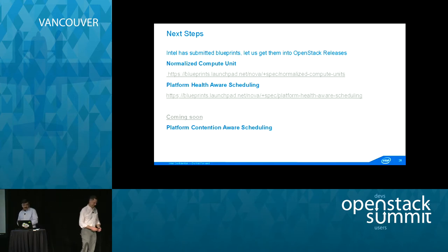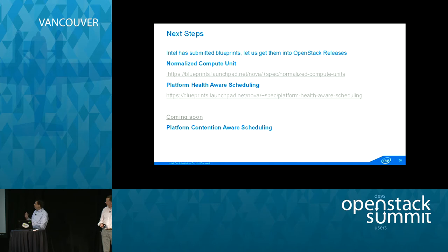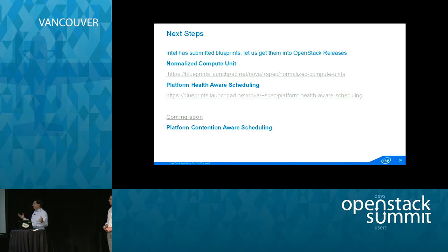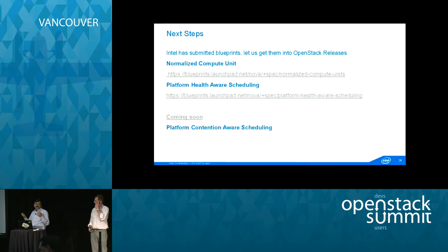We have submitted some blueprints: one on the normalized compute unit — I'm hoping everyone will support it — and one on platform health. If a system is not in a good state, we can use IPMI to detect the health state and make sure the Nova scheduler and scheduling algorithms are smart enough to avoid those nodes. And of course the contention pool: how do you know who's the noise maker, who's the aggressor versus the victim, and how do you find out which VMs are being affected? We do that with statistical algorithms as well as capabilities in the Intel processor.